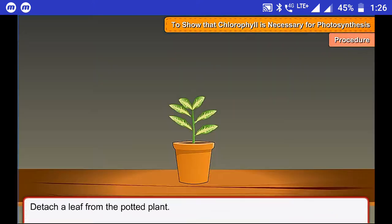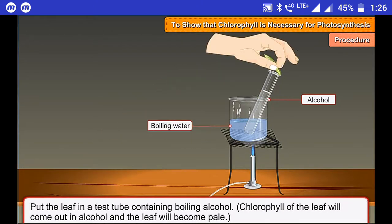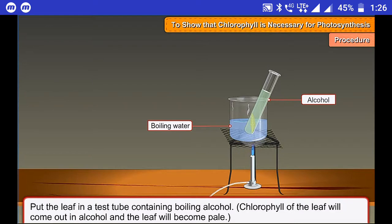Method: Detach a leaf from the potted plant. Put the leaf in a test tube containing boiling alcohol. Chlorophyll of the leaf will come out in alcohol and the leaf will become pale.